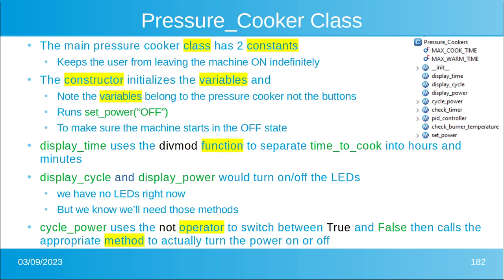The main pressure cooker class has two constants. It keeps the user from leaving the machine on indefinitely — that's the only reason they're there. The constructor initializes all of the variables and makes sure to set the power off. One of the things I want you to note is that the variables belong to the pressure cooker, not to the buttons.